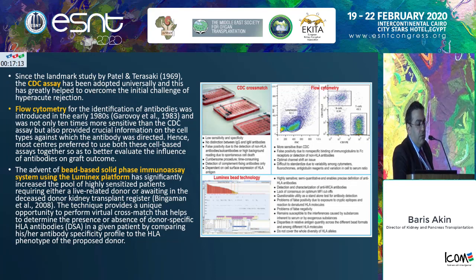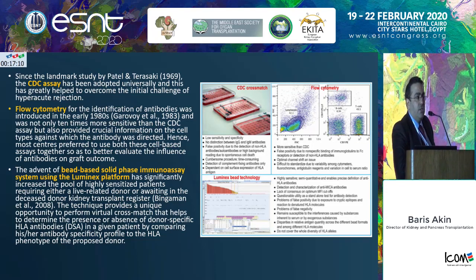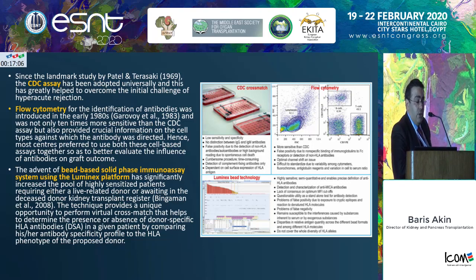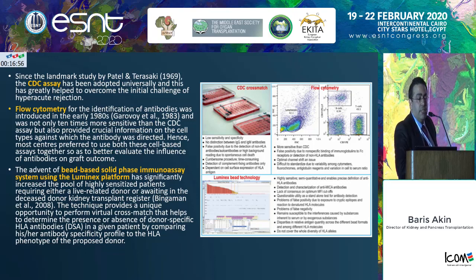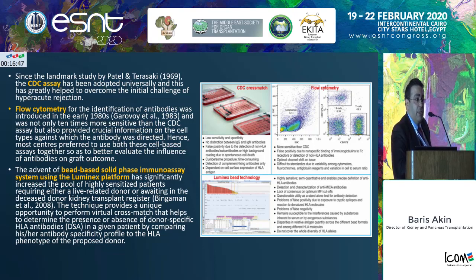Initially we had CDC cross-matches to manage humoral rejection, then we started to do flow cytometry. We learned about different cell types and reactions. It was a very important step to have the solid phase single bead studies that allowed us to know all HLA antibodies in a recipient. That enabled us to do virtual cross-match and progress more, but still there's something missing.